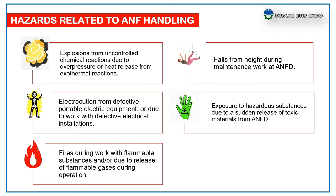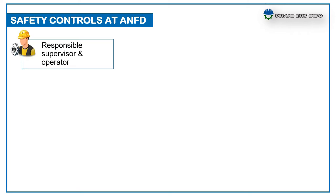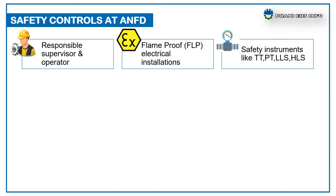Static electricity due to powder material dispersion or improper earthing or bonding. The safety controls to be provided at ANFD are: a responsible supervisor or operator must be available at the time of ANFD handling or operation. Only flame-proof FLP electrical equipment to be used in the process area. Temperature transmitter, pressure transmitter, and level switches are to be provided to monitor process parameters such as temperature, pressure, and level respectively.